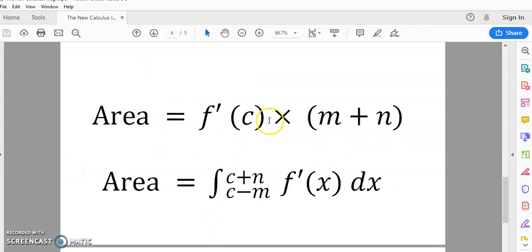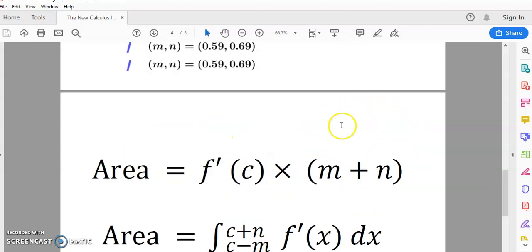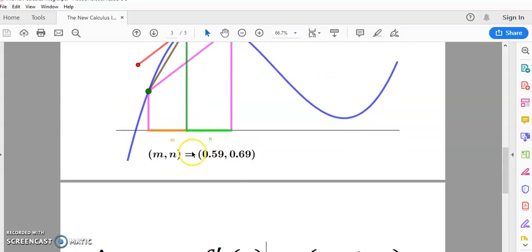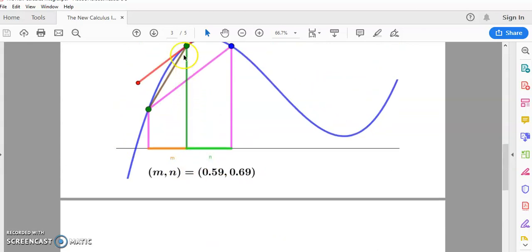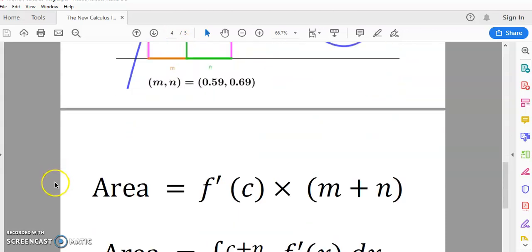And the area is just simply the arithmetic mean, which is this f prime of c, which I'll explain in a moment, multiplied by the interval width. So, m plus n is the interval width, and f prime of c is the length of the arithmetic mean.